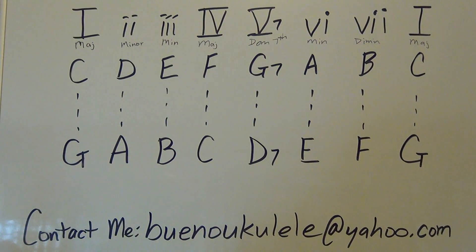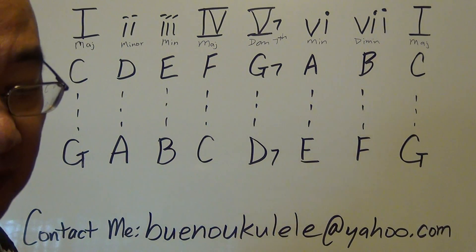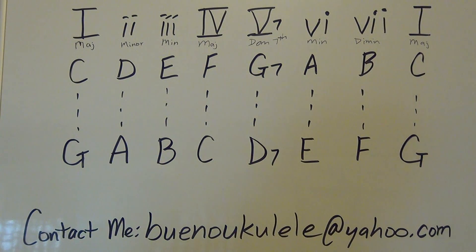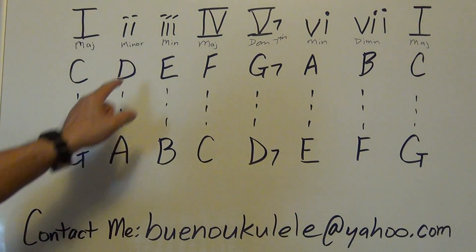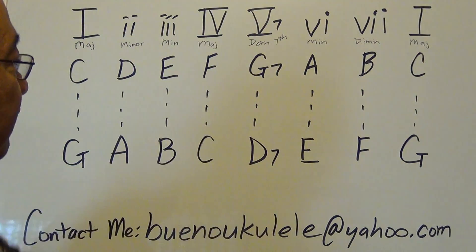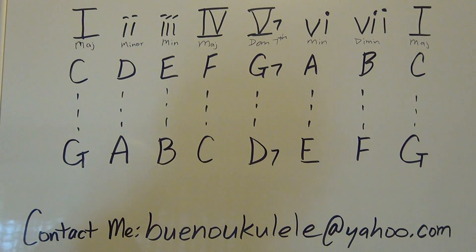Today we're going to be talking about the key of C, the key of G, and how it relates to theory. We talked about earlier how the 1-4-5 chord — the 1, the 4, and the 5-7 chord — are very important to understand and know what they mean.